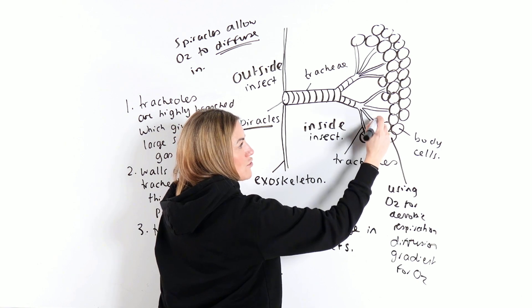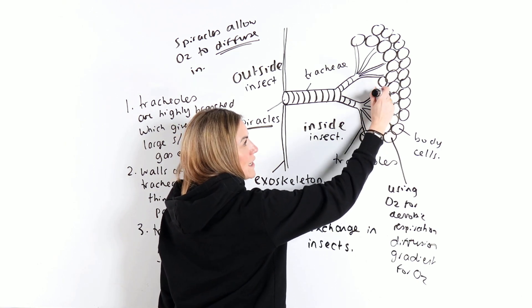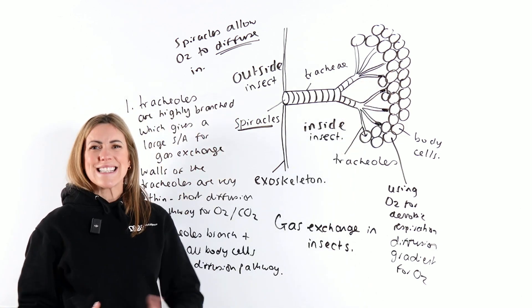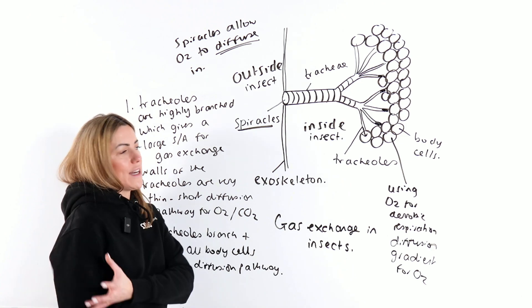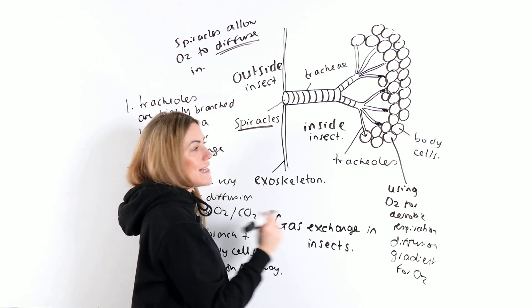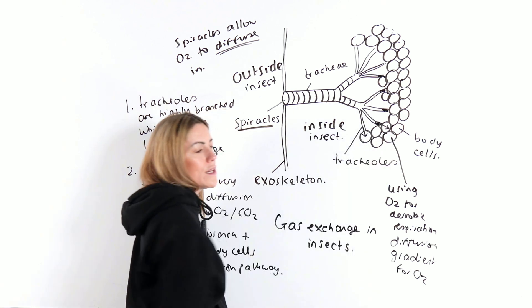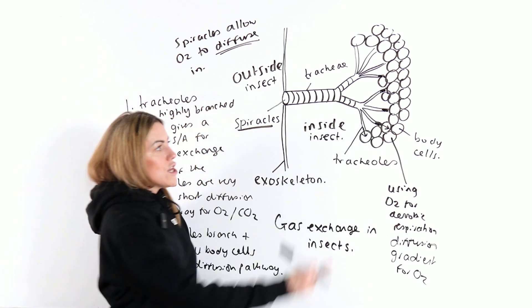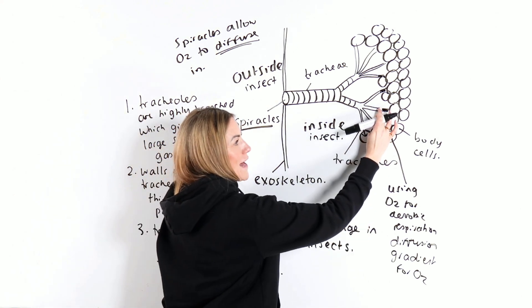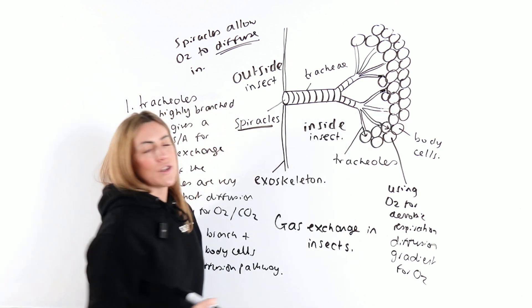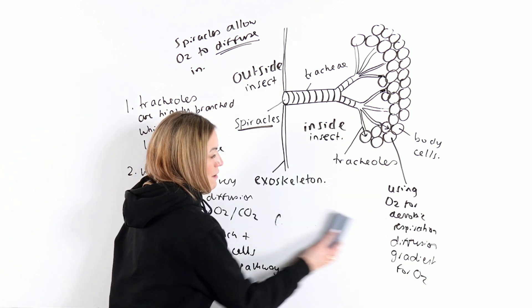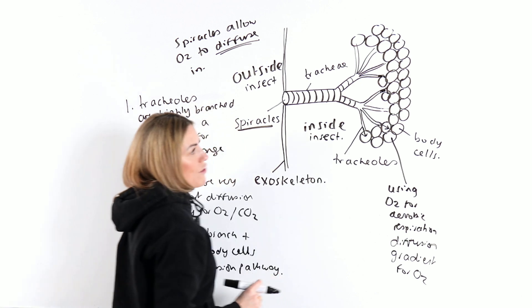In the ends of the tracheoles, there is some fluid, which is mainly water. When an insect is very active with a high rate of respiration, let's say it's flying which requires loads of energy, what can happen is the fluid that's in the ends of the tracheoles can move into the insect's cells or tissues. So the amount of fluid in the end of the tracheole is reduced. Let me show you that. Imagine that fluid has moved into the body cells of the insect.